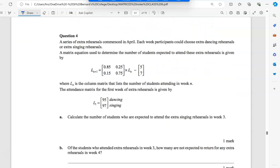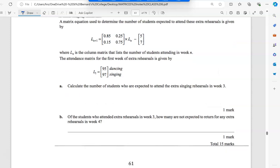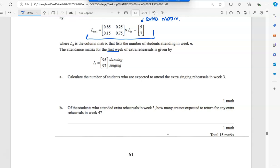All right, let's move along. So a series of extra rehearsals commenced in April. Often this question four, it's the last one in the exam. So you've had this scenario going on forever. They had dance rehearsals and singing rehearsals. So the matrix equation used to determine the number of students expected at these extra dancing and singing rehearsals is given by this. So here, what you can see, you've got this extra matrix. So extra matrix, don't use the power trick. And then they've given me L_1. So they said L_1 was the first week. So then it says calculate the number of those who are expected in week three. So that would be L_3. So that means I want to go two ahead, but I have to do it recursively because we've got that extra one.